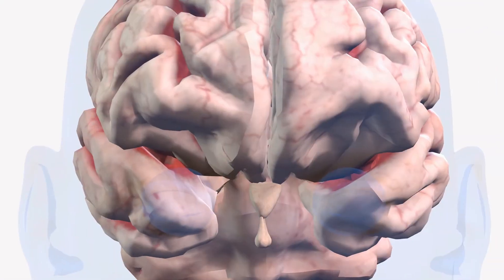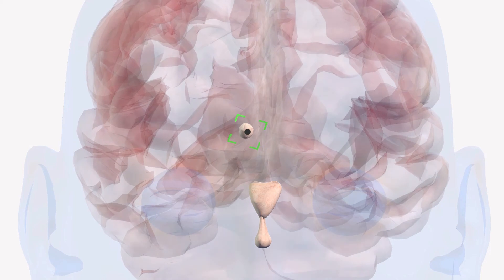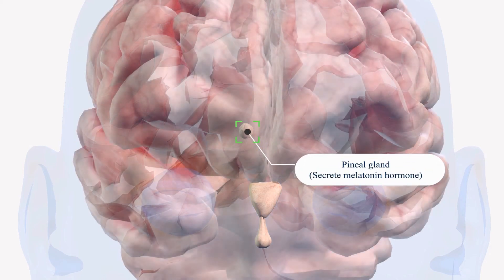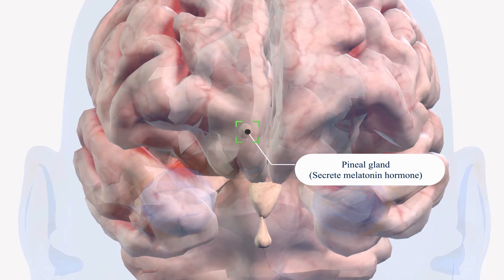There's another endocrine gland in the brain known as the pineal gland which is around this area, and it secretes melatonin. Melatonin is actually responsible for the body biological clock.